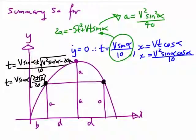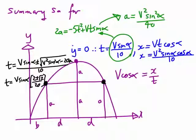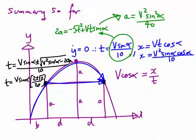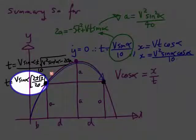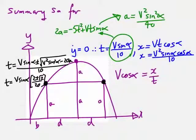Looking at the question, what we're actually after is v cos alpha. Now x equals vt cos alpha, so v cos alpha equals x over t. The bird takes time v sine alpha times (2 plus root 2) on 20 to get to the collision point — the same time as the soccer ball takes to reach height a — and we're taking the positive case.